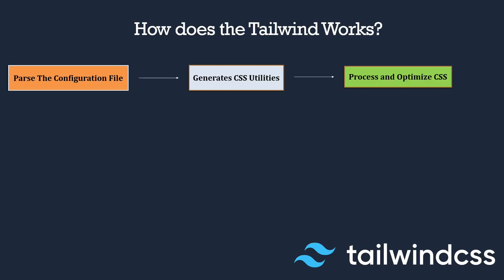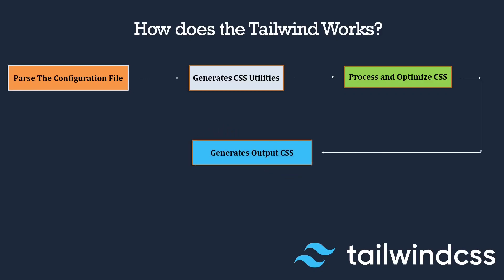The optimizations include removing all unused styles and minifying the CSS file. That's how Tailwind processes and optimizes your CSS. Finally, after all of these steps, it generates the output CSS.